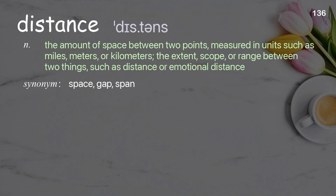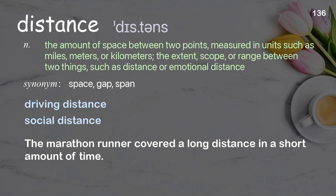Distance: the amount of space between two points, measured in units such as miles, meters, or kilometers; the extent or range between two things, such as physical or emotional distance. Examples: driving distance, social distance. The marathon runner covered a long distance in a short amount of time.